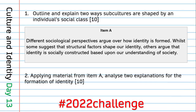This week we've been looking at culture and identity. The two questions I set this morning were: outline and explain two ways subcultures are shaped by an individual's social class — covering working class, middle class, professional, and upper class subcultures. The second question is an item question where you apply two phrases from the item to analyze two explanations for the formation of identity. The item hints at interactionism and conflict or consensus theories, noting that structural factors like social class, gender, and ethnicity shape identity, while others argue identity is socially constructed.